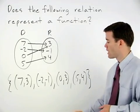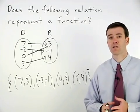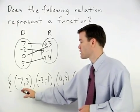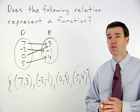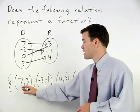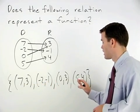Now to determine if the relation is a function, we can simply look at the x-coordinates of each ordered pair. Notice that they're all different: 7, negative 2, 0, and 5.